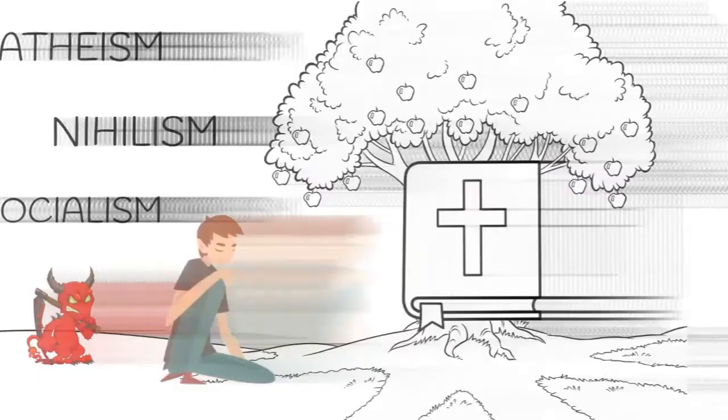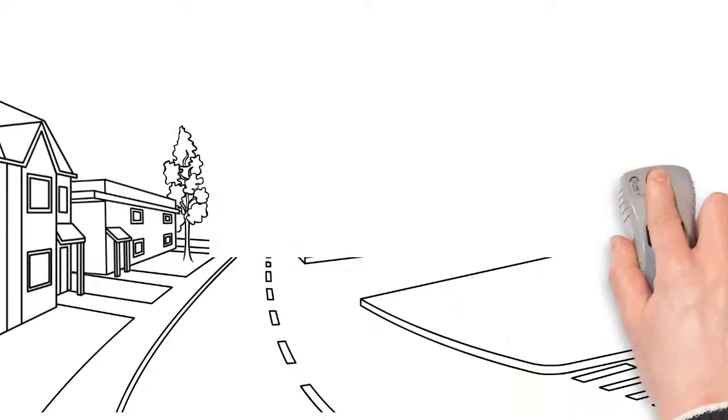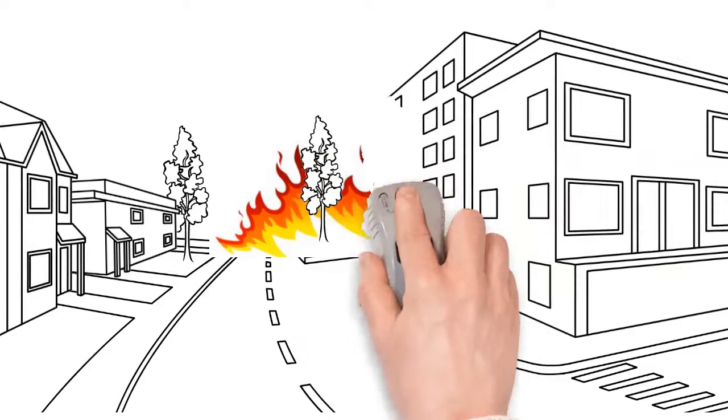Among them are atheism, nihilism, and socialism. As his small town breaks into fires, murders, and unrest, he sees it as a purging of the demons.